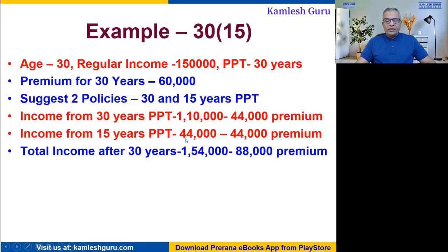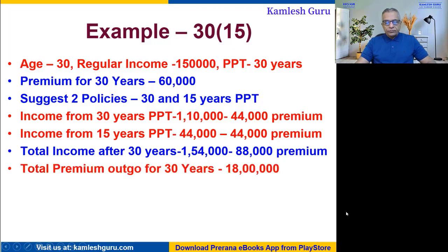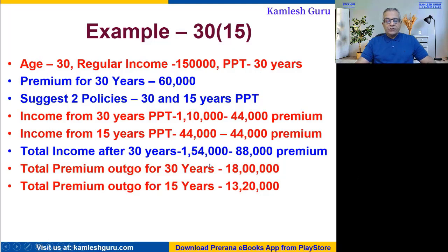So the income after 30 years will be 1,10,000 plus 44,000, that is 1,54,000. The total premium will be 88,000, so there is an increase from 60,000 to 88,000. However, the total premium outgo without splitting is 18,00,000 (60,000 × 30), and after splitting, the total premium outgo for 15 years is 13,20,000 — so the prospect saves about 5,00,000 in premium.